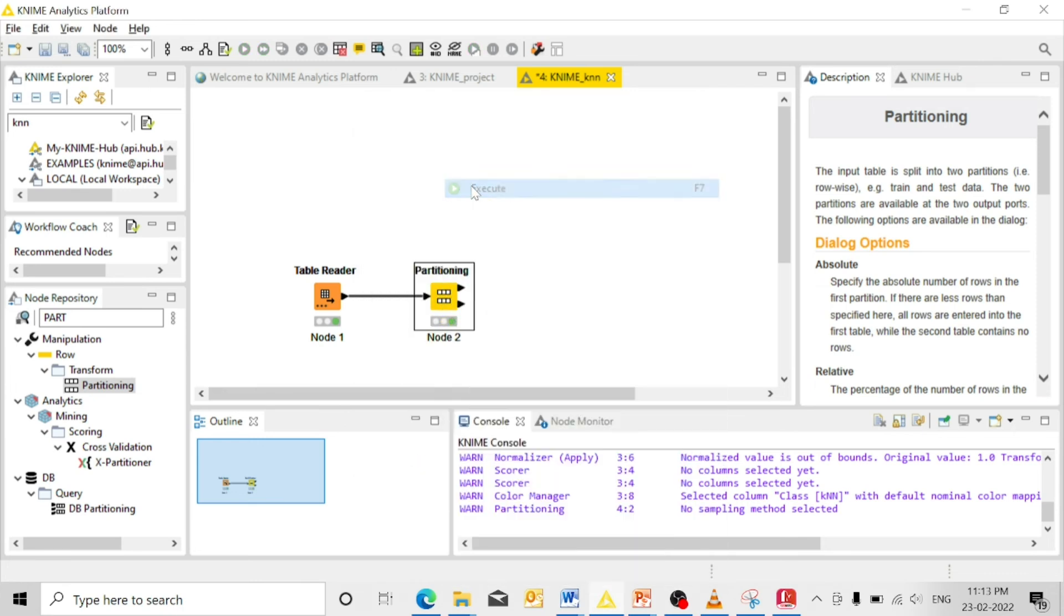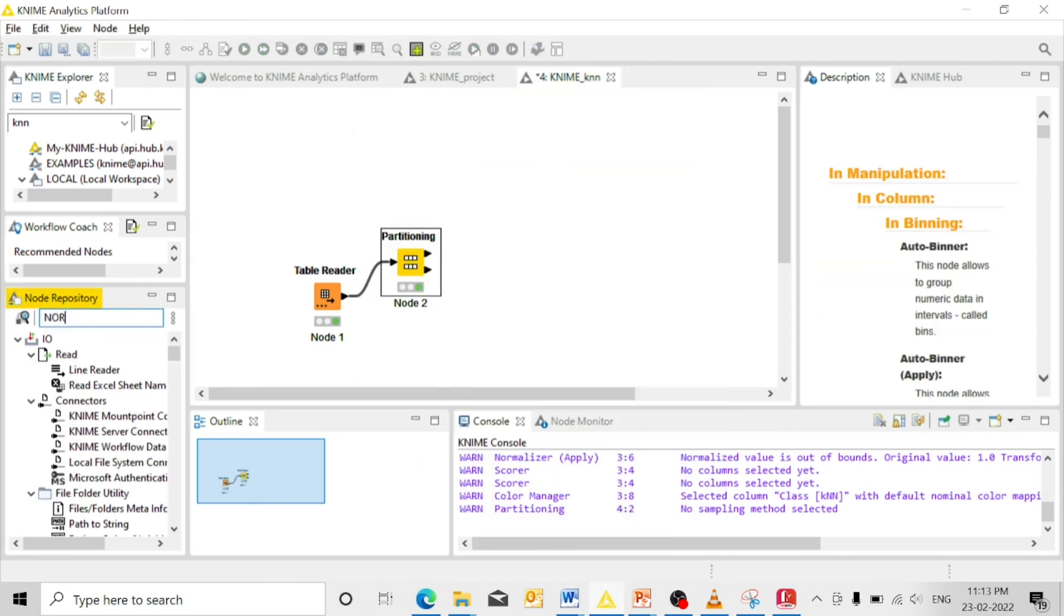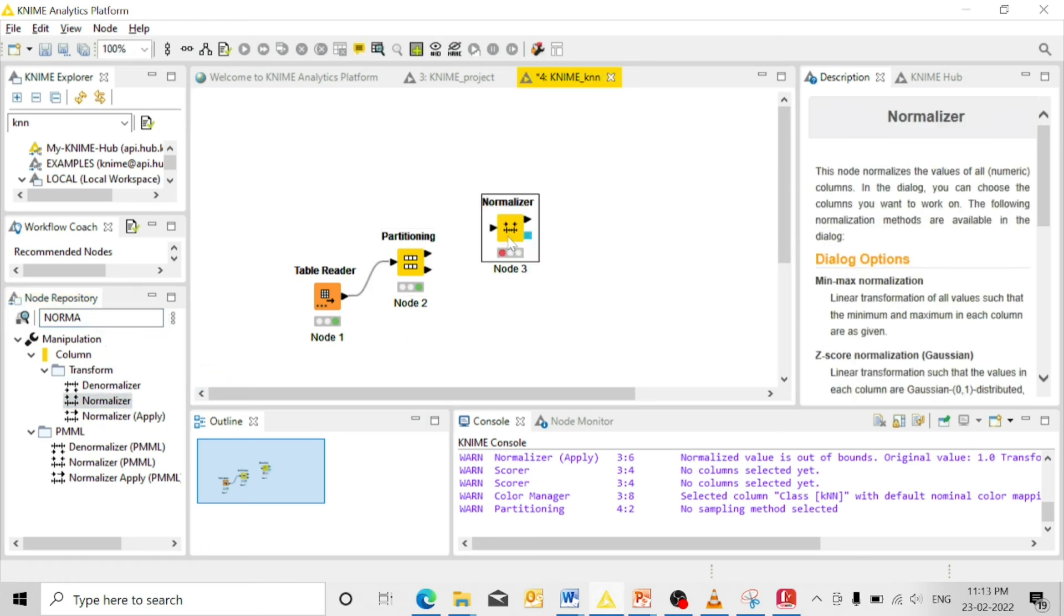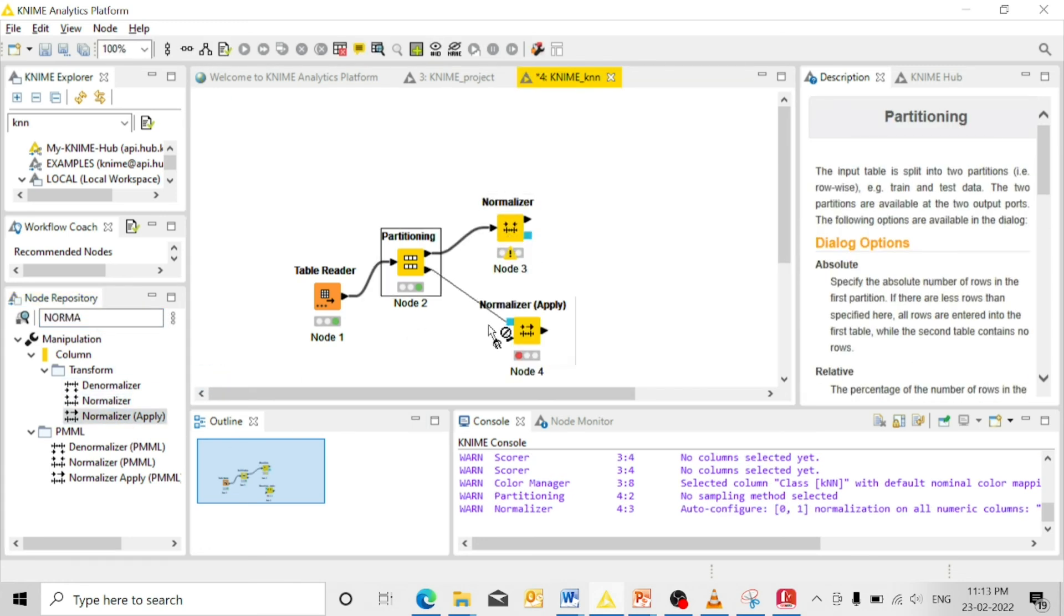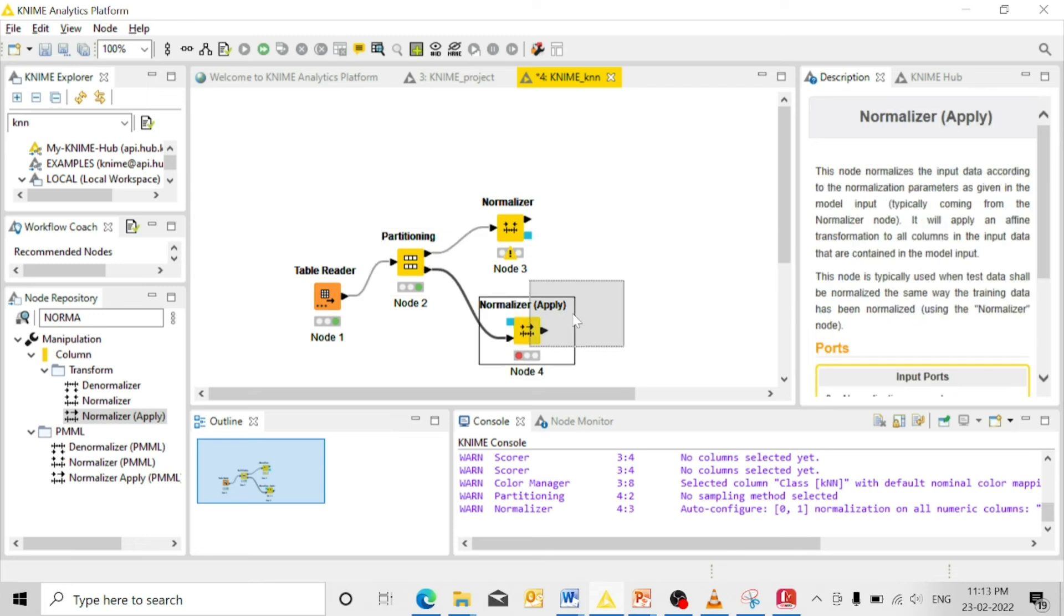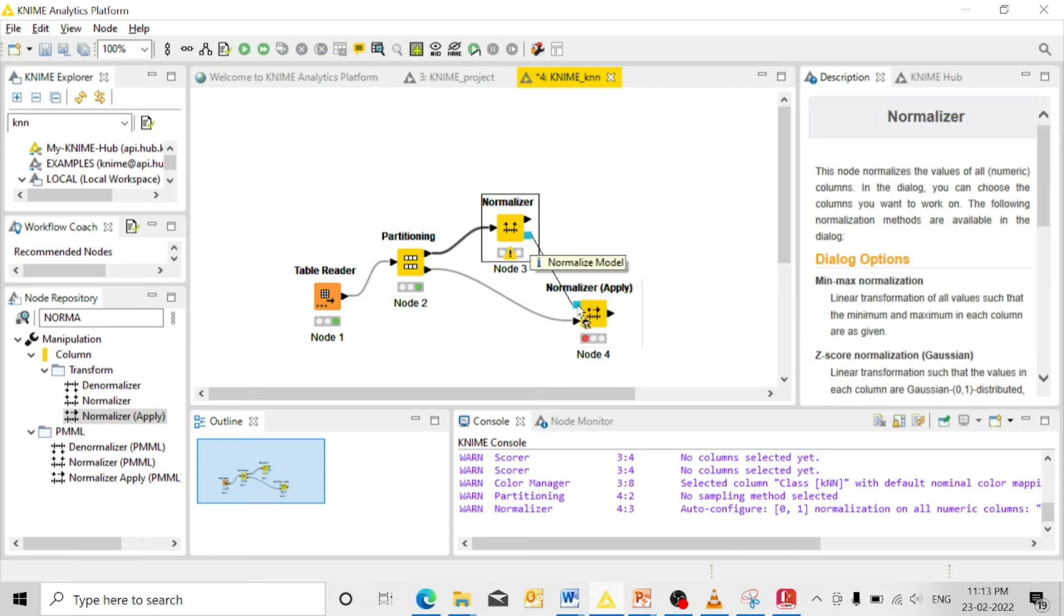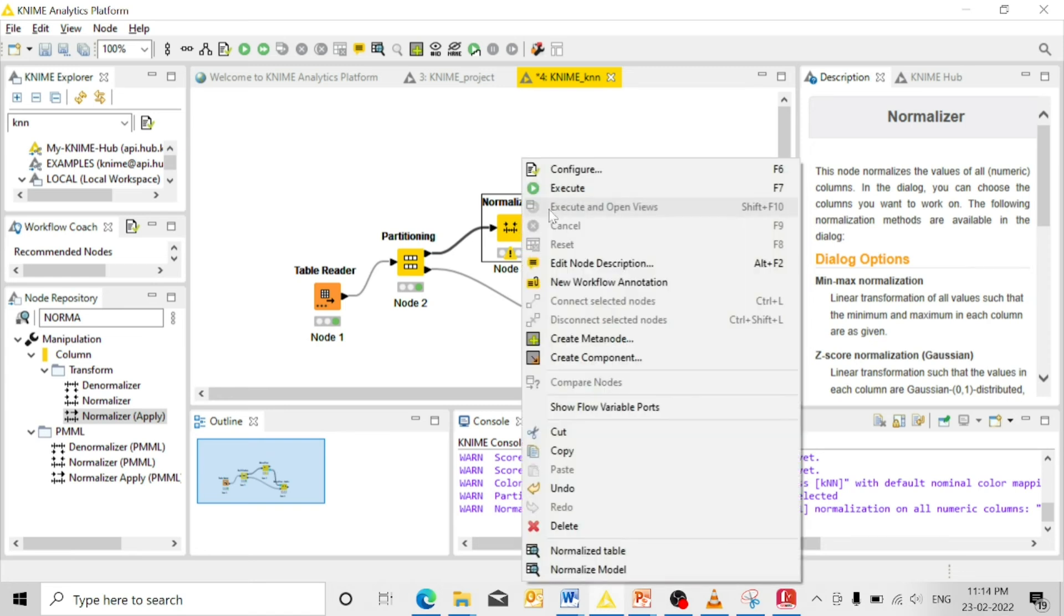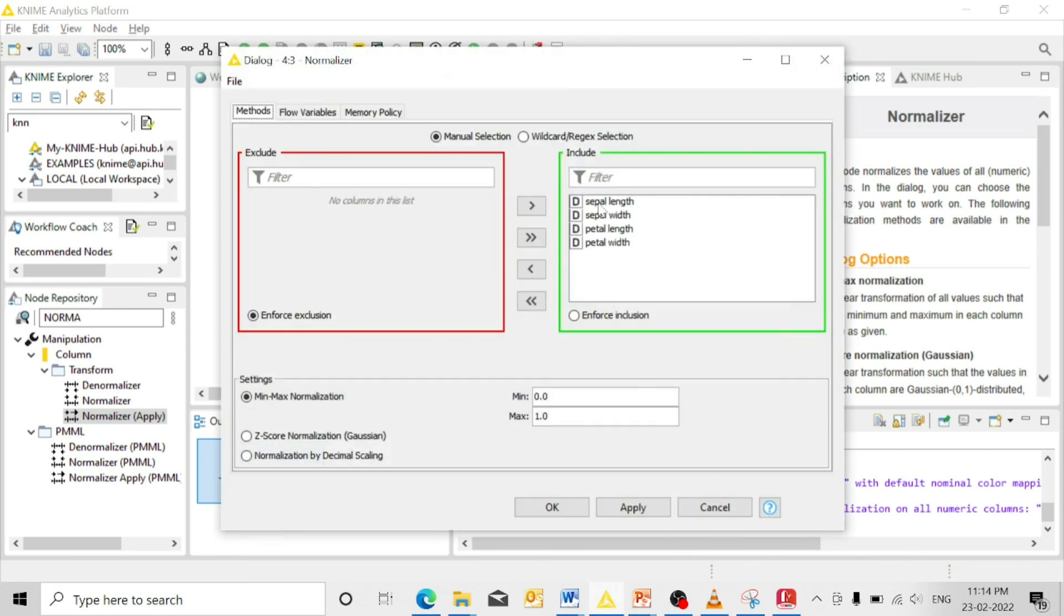Then right click and execute normalizer node to normalize the column values. So we have a normalizer, and then we need the training node and the test node appropriately. The output of this is going to connect with the output of this node. Then right click the normalizer node, configure it. Let us consider all four parameters.